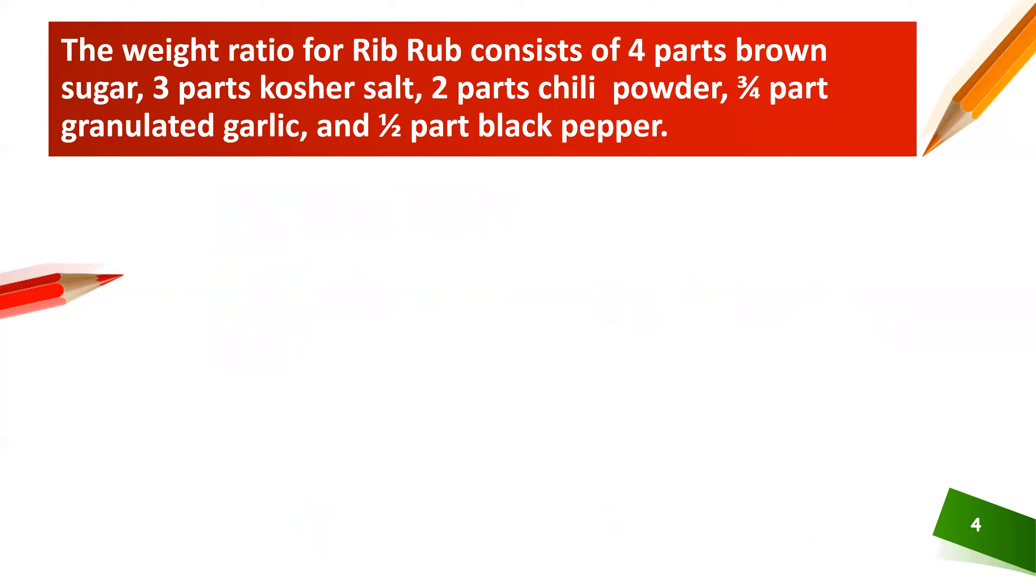Now when you're working with ratios sometimes the ratio given to you is not very nice. For example this problem said the weight ratio of a rib rub consists of four parts brown sugar, three parts kosher salt, two parts of chili powder, three quarter part of garlic, and a half part of black pepper. Why are there fractions in here? Well let's take a look. If we write down the parts we have four to three to two to three quarter to one and a half.